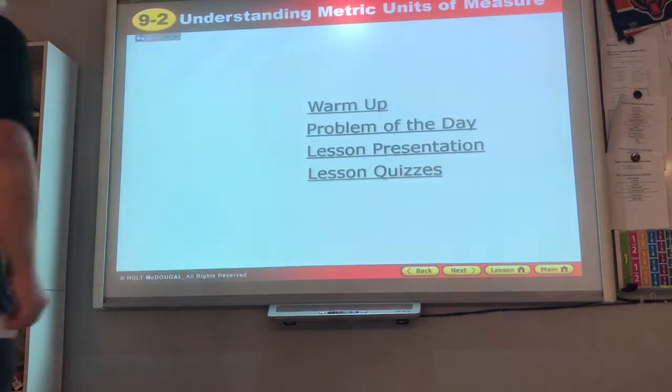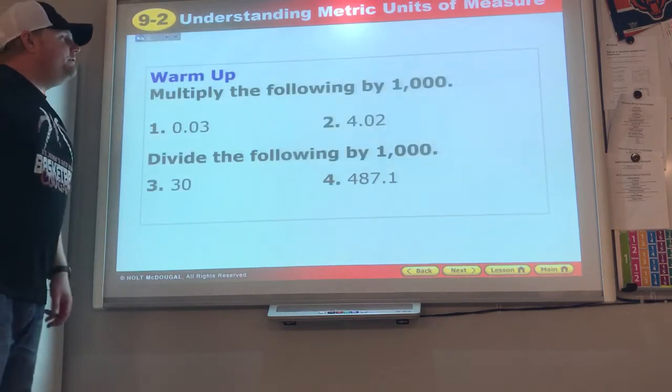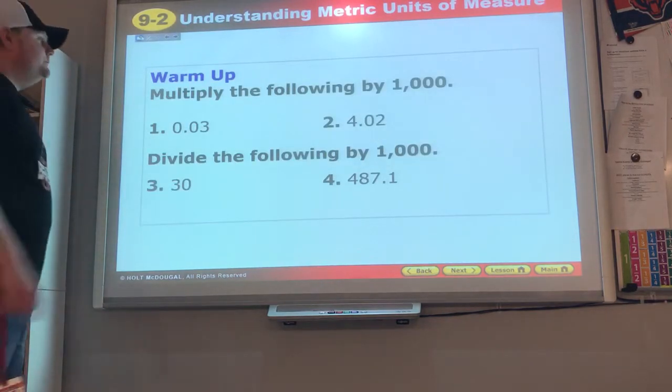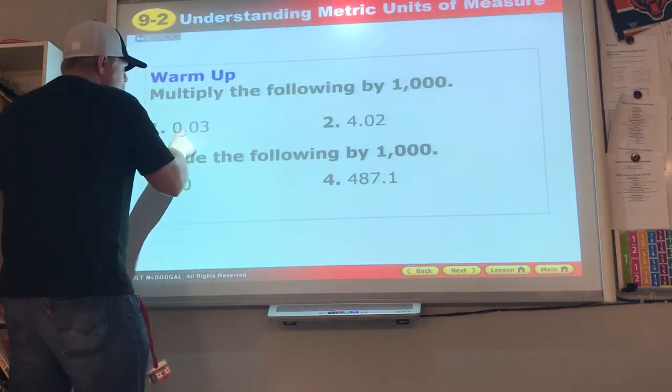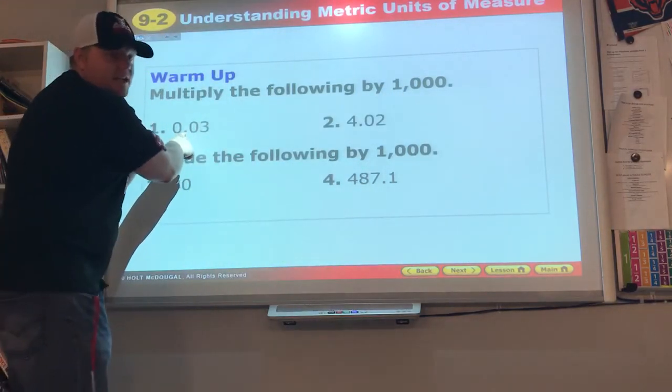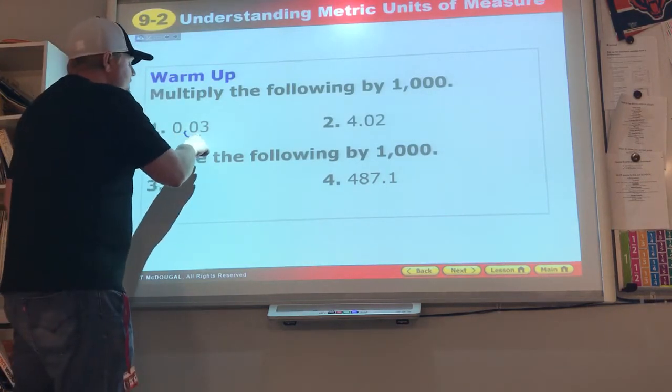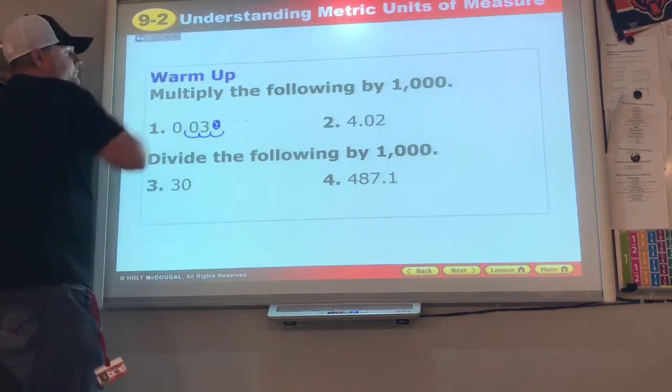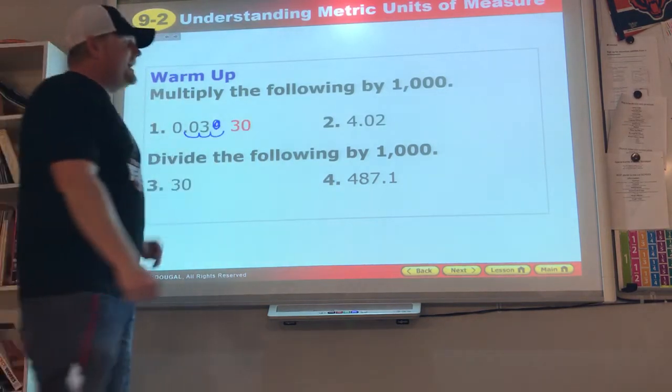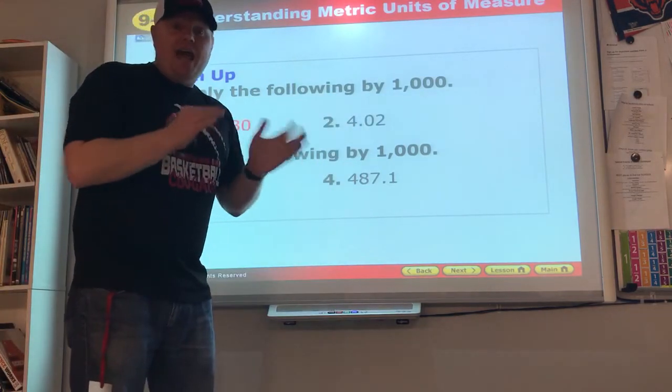Understanding metric units of measure. Multiply the following by 1,000. Three zeros - start at the decimal. If you didn't hear me, start at the decimal. One, zero, two, zero, three - gotta fill it in. The answer is 30. Start at the decimal. The place you start is at the decimal.